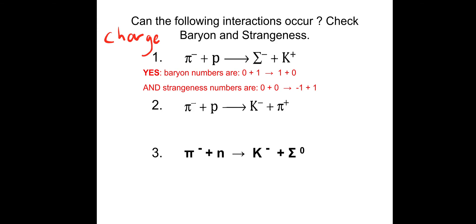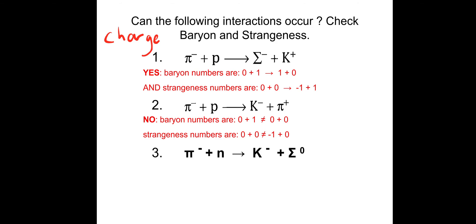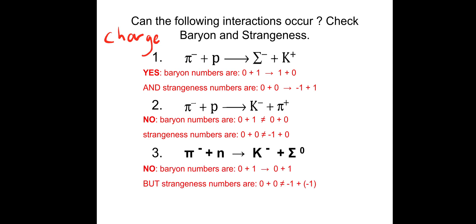Second interaction: charge — minus and plus on the left, minus and plus on the right — okay. Baryon number: 0 plus 1 on the left; the K-meson and pi-meson both have baryon number zero on the right — baryon number is not conserved, so that interaction cannot occur. Third interaction: charge — negative and zero on the left, negative and zero on the right — okay. Baryon number: 0 plus 1 on the left, 0 plus 1 on the right — okay. But strangeness: 0 on the left; K minus gives minus 1, sigma particle gives minus 1, so minus 2 on the right — strangeness is not conserved. That interaction cannot occur.